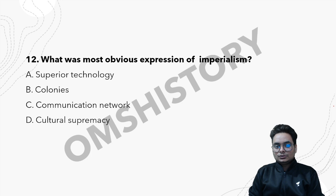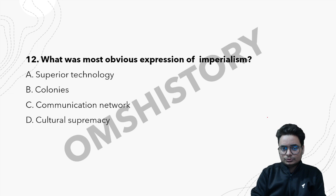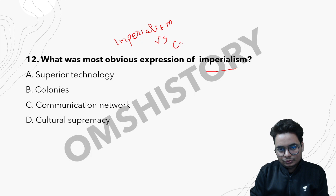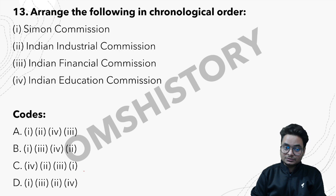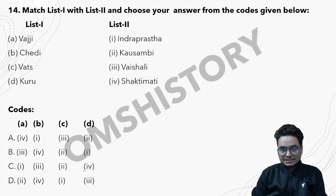Next: what was the most obvious expression of imperialism? Your homework is also to find the difference between imperialism and colonialism — what are the similarities and differences between these two concepts? Then, chronologically arrange these commissions: Diamond Commission, Industrial Commission, Financial Commission, and Education Commission. Finally, match the Janpadas or Mahajanpadas with their capitals — a very frequently tested area.